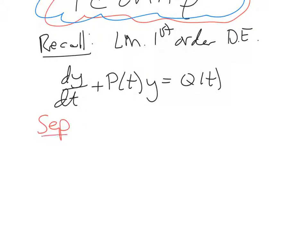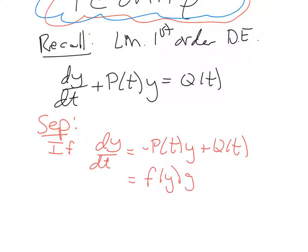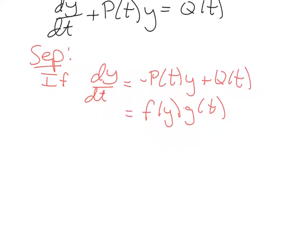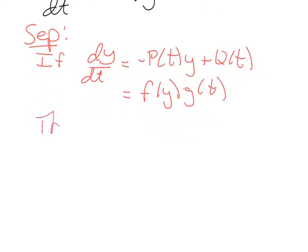Let's say separation. If you can write the differential equation dy/dt, now I'm going to rearrange a little bit, equals negative p of t times y plus q of t. You can always do that step. If you can write that as f of y times g of t for some f and some g. In other words you can literally separate this thing out.